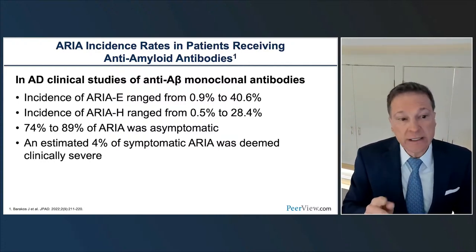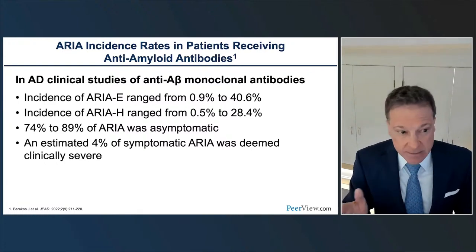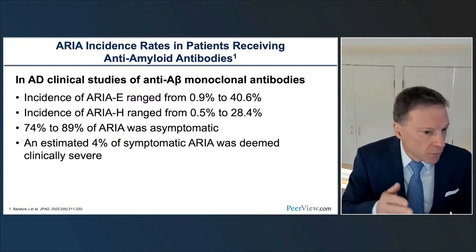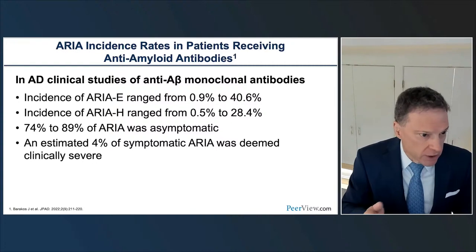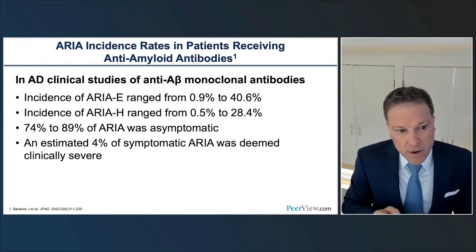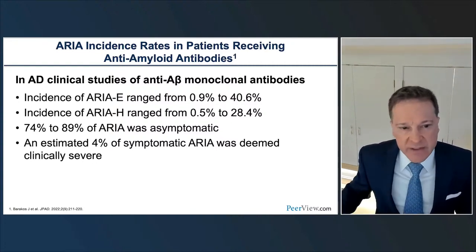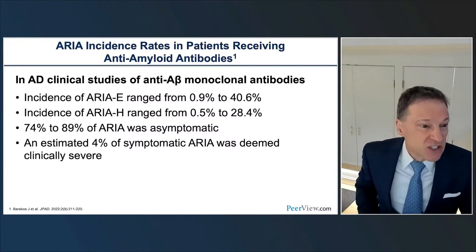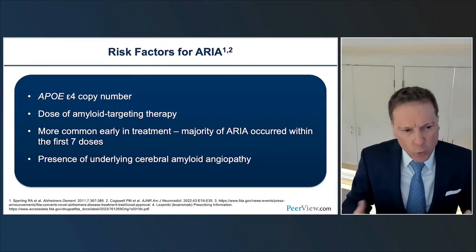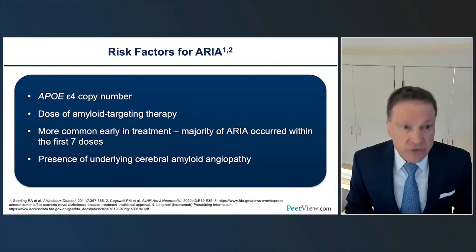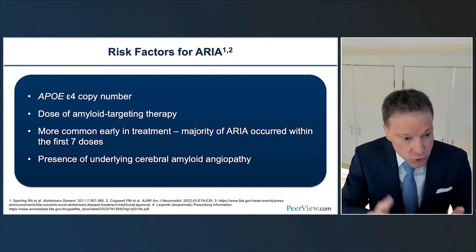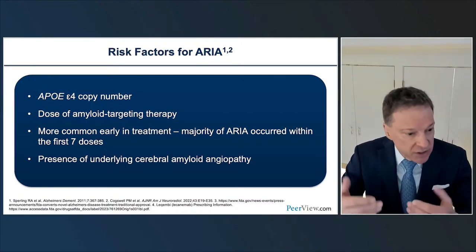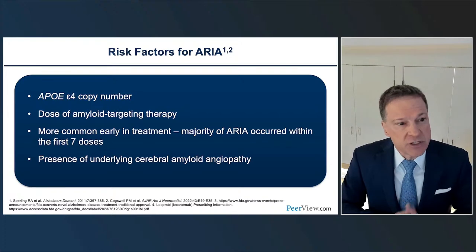Not only is the majority of ARIA asymptomatic, but when it is symptomatic, the majority of symptoms are mild or moderate. Only about 4% of symptomatic ARIA was deemed clinically severe. What are the risk factors for developing ARIA when being treated with anti-amyloid agents for mild Alzheimer's disease? The main risk factor is the number of copies of the ApoE4 allele you carry. Number two is the dose of agent.